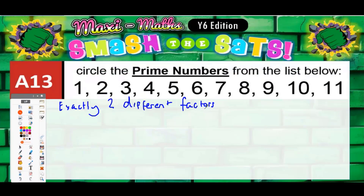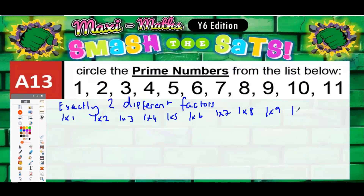What we're going to do is look at the factors of all these numbers. Every number can be made by doing one times itself: one is one times one, two is one times two, three is one times three, four is one times four, five is one times five, six is one times six, seven is one times seven, nine is one times nine, ten is one times ten, eleven is one times eleven. There's a reason why I'm doing it this way — you'll see in a minute.